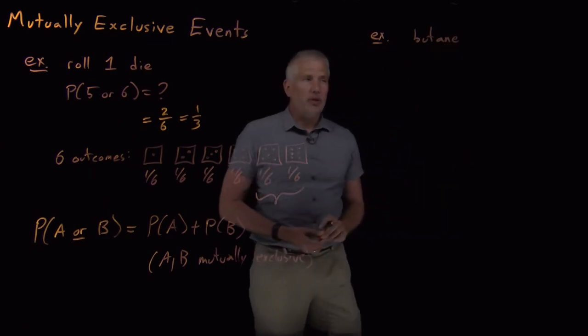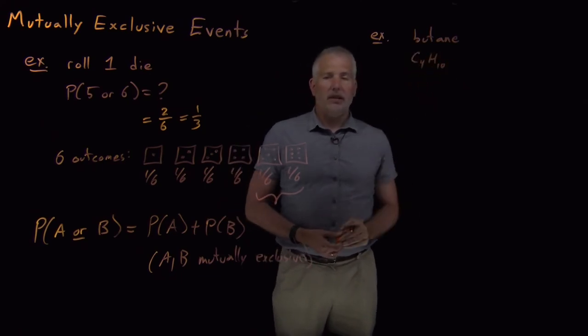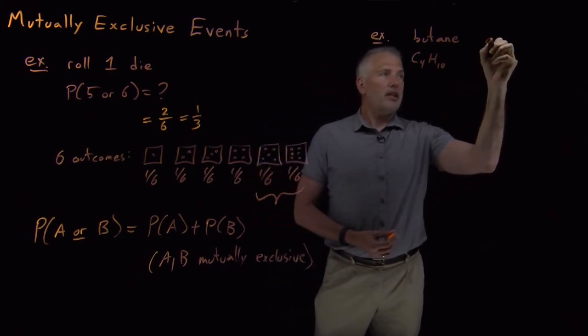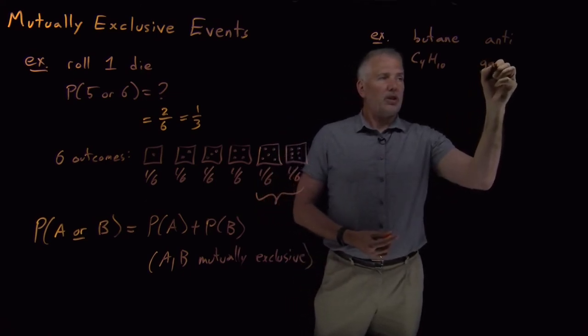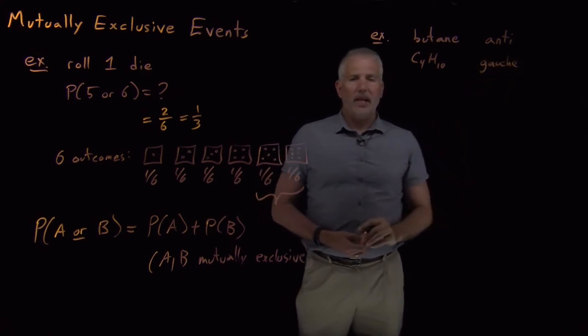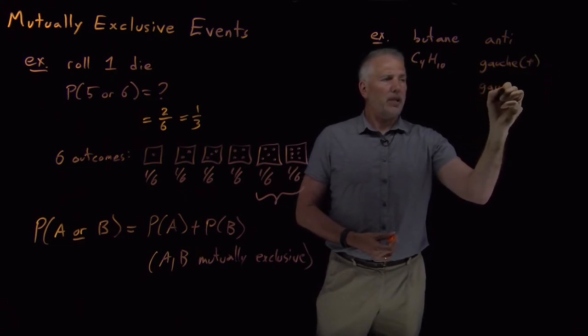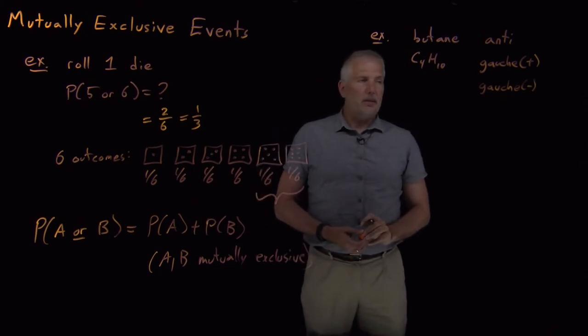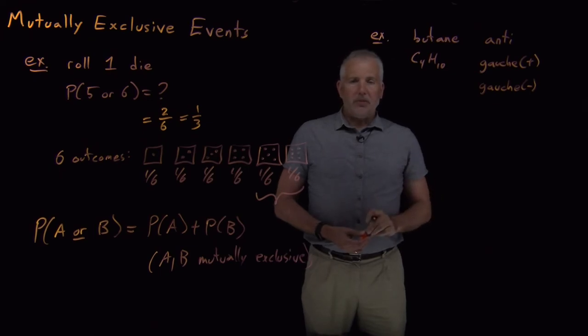Let's say we have a butane molecule, a molecule of butane C4H10. N-butane can exist in three different conformations. It can exist in the trans or anti-conformation or a gauche conformation. And the gauche conformation can either be gauche plus or gauche minus. So those are the three different conformations that a butane molecule can have.